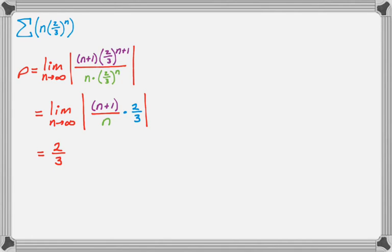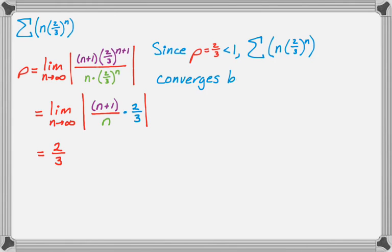So this limit overall is actually just 2 thirds. And now I write my conclusion. So since rho is 2 thirds, which is less than 1, the summation that we're given converges by the ratio test. And that's it. So you calculate rho. You decide if it's greater than or less than 1. If it's equal to 1, you just have to use a different test. And then you write your conclusion. So let's take a look at another one.